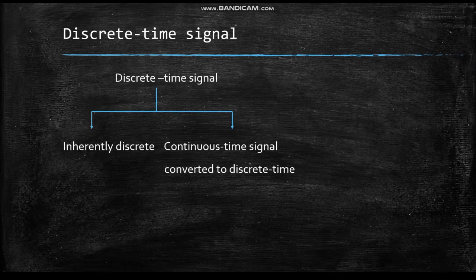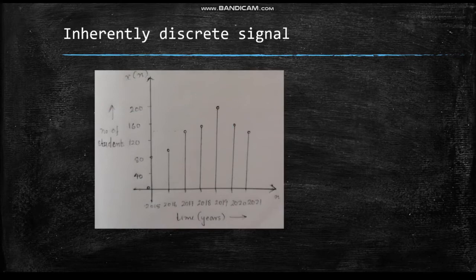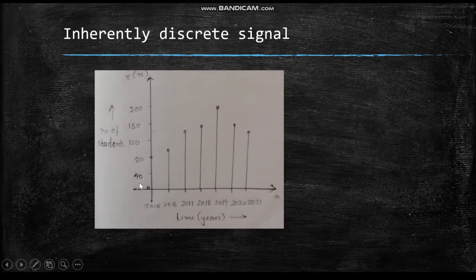Discrete time signals are classified into two types: inherently discrete signals, and continuous time signals converted to discrete time signals. An example of an inherently discrete signal is one where the independent variable is time in years and the dependent variable is the number of students. The x(n) discrete signal in this case is clearly inherently discrete in nature.